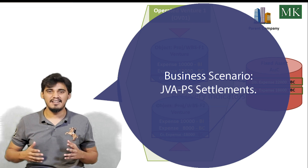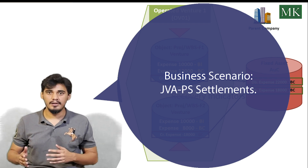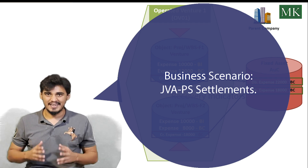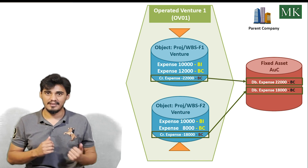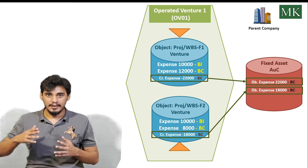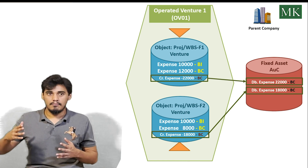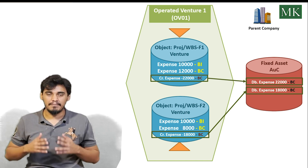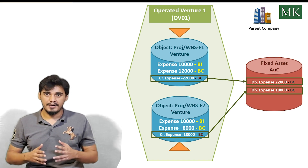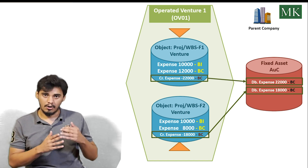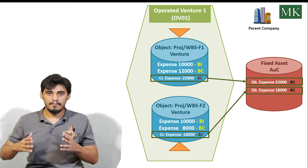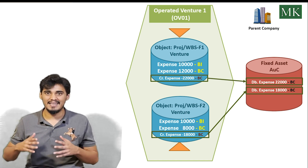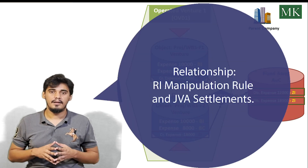Here is the second business case for the recovery indicator manipulation rule, which is for project settlement at period end. The company wants to settle all the costs recorded on WBS elements F1 and F2 to the receiver fixed asset or AUC, so that it will be reported in the balance sheet. Also, the company does not require the credit for this cost booked on the WBS element during settlement to be processed by the cutback transaction and distributed between the operator and the joint venture partners.